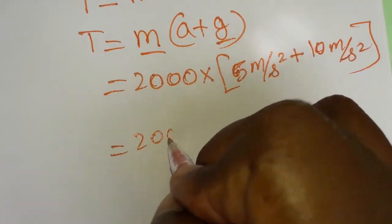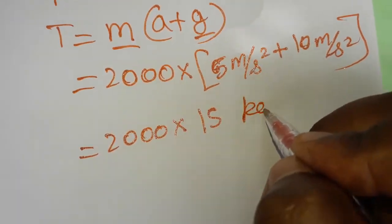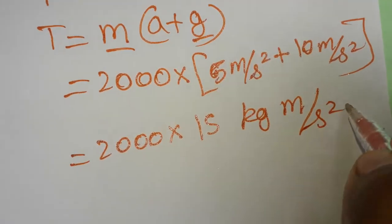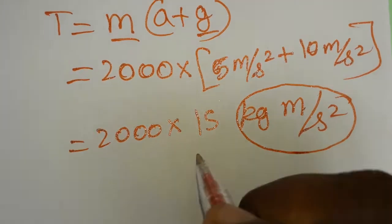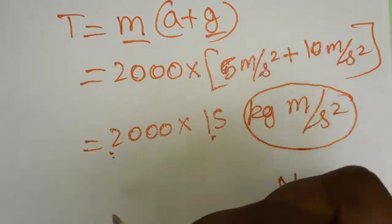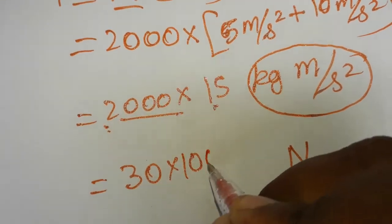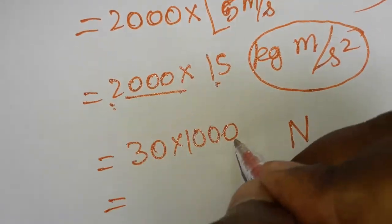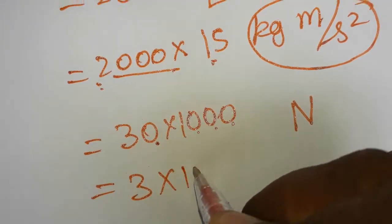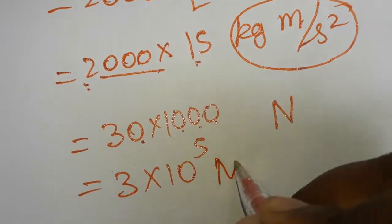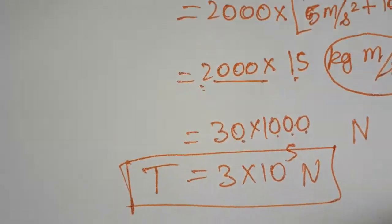So T equals 2000 into 15. The unit is kg·m/s², which we call newtons. 2000 times 15 equals 30,000, which gives us 3 into 10 to the power 5 newtons. This is our final answer for the initial upthrust force produced in the rocket.